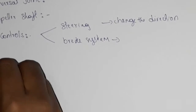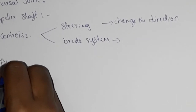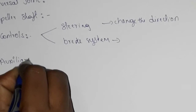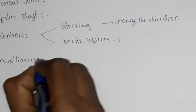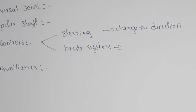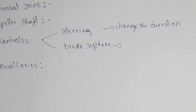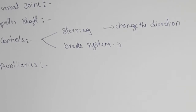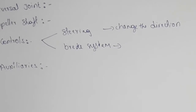Auxiliaries include systems such as the horn system and lighting system. These also include the starting circuit, charging circuit, horn circuit, and the fuel system — petrol or oil.